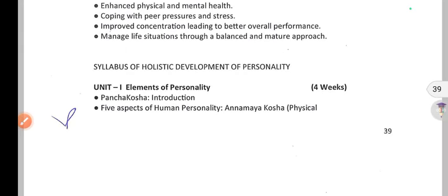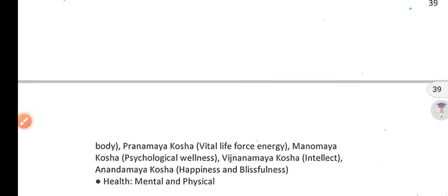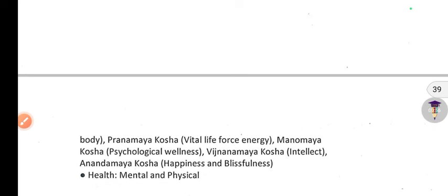The first unit is Elements of Personality — 5 aspects of human personality. Annamaya Kosa, Physical body. Pranamaya Kosa, Psychological Wellness. This is a psychological subject. So first, you will see Health — Mental and Physical.